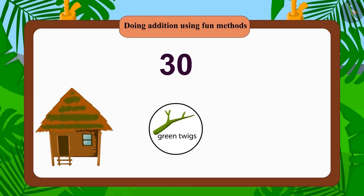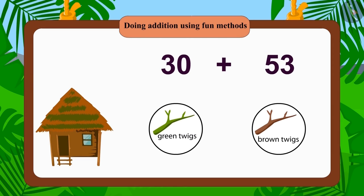So she rebuilt her house using 30 green twigs and 53 brown twigs. So how many thin twigs did Chanda use this time? Chanda again used only 83 thin twigs.